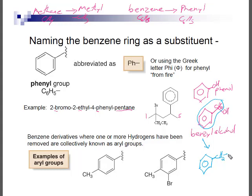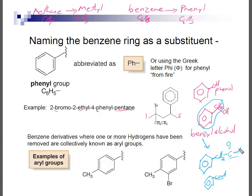Benzoic acid has the carboxyl group directly attached to the ring. If there were a CH2 between the ring and the acid group, it would not be benzoic acid. The benzyl group is like a derivative of toluene, while the phenyl group is a derivative of benzene directly. These distinctions matter for naming compounds with these ring-containing groups.